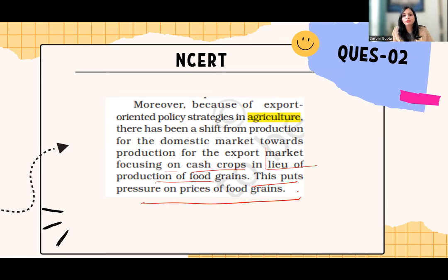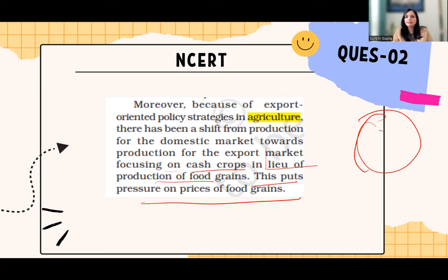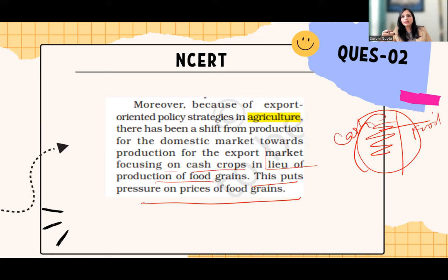This puts pressure on the price of food grains. When the focus shifts to growing more cash crops, less land is used for food grains. Previously, when all land was used for food grains, supply was high and prices could stay low. But now, with part of the land diverted to cash crops, food grain production falls — so if there are fewer resources, people have to pay more, and pressure on food grain prices increases.